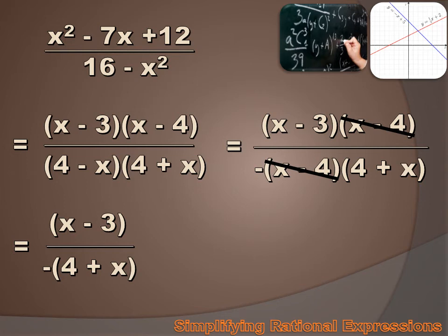And I can rewrite this expression as x minus 3 over minus 4 plus x. And I can clean that up a little bit more too. First of all, I can put that minus sign out in front of the entire fraction. And then 4 plus x is the same thing as x plus 4. So I'll rewrite this as negative x minus 3 over x plus 4.